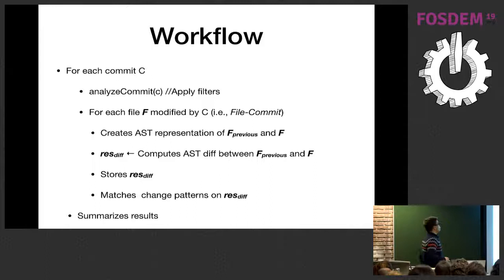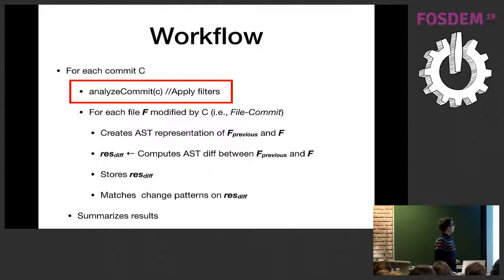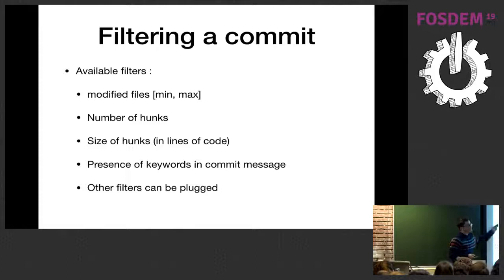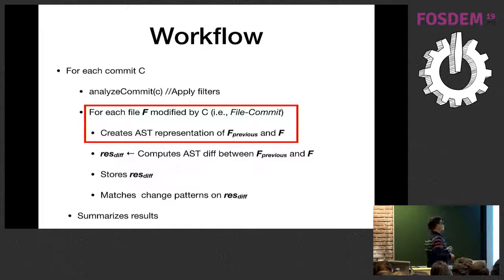This is the workflow. For each commit, we first apply some filters according to the number of modified files, the number of hunks each file introduces, the size of the hunks in lines of code, and the presence of keywords in the commits. We apply the filters and decide whether to accept the commit or not. If we accept the commit, we analyze each file modified by the commit — we call it a file commit.